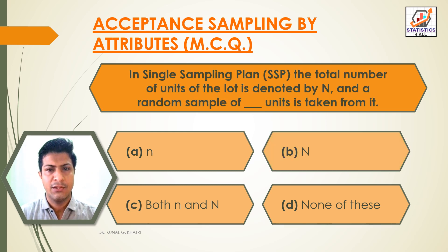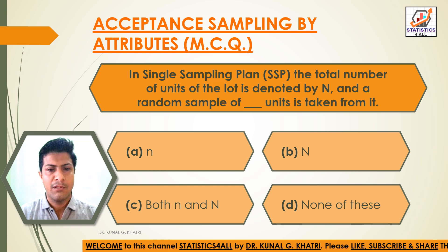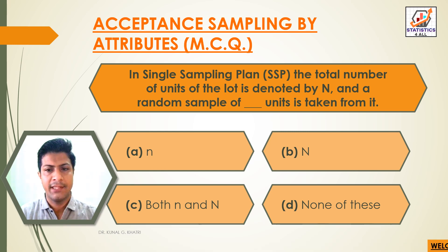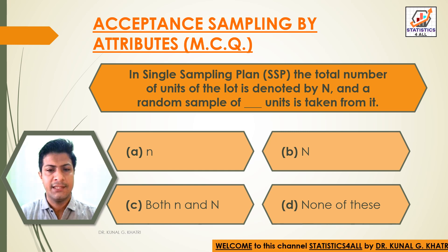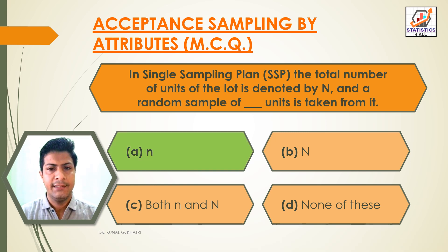Question 11: In a single sampling plan, the total number of units of the lot is denoted by capital N, and a random sample of dash units is taken from it. Option A: small letter n. Option B: capital N. Option C: both. Option D: none of these. The answer is Option A — small letter n. A random sample of small n units is taken from the lot.